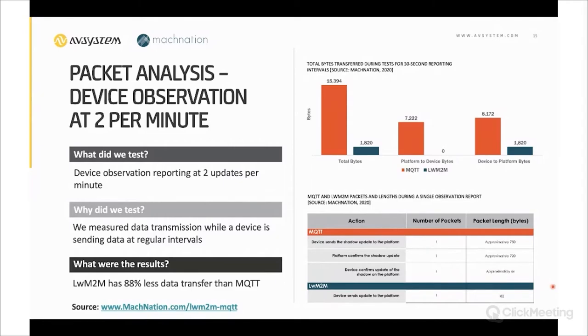Let's take a look at another scenario: device observations at a fixed rate—one every 30 seconds, two per minute. Here again we see Lightweight M2M has quite an advantage. This really comes back to TCP and the acknowledgements that are going on. With Lightweight M2M we're using CoAP over UDP, so there's actually no need for an ACK to come back every single time the device wants to send an observation northbound to the platform. With MQTT and TCP, you can't avoid that since it is part of TCP. Even if you're using QoS 0, you still have to deal with the TCP ACK.